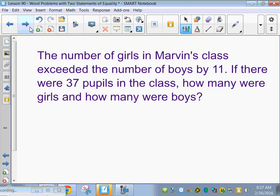The number of girls in Marvin's class exceeded the number of boys by 11. So there's an equation. If there were 37 pupils in the class, how many were girls and how many were boys? That's the second equation. That's another word for people.